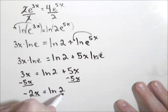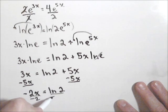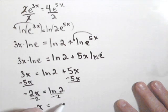Last step, divide by negative 2. And we get x equals negative ln of 2 over 2.